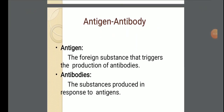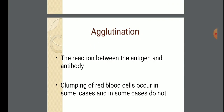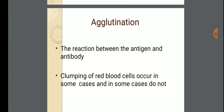This is antigen versus antibody. Antigens are molecules capable of stimulating an immune response — that is, the foreign substance that triggers the production of antibodies. Antibodies, that is immunoglobulins, are Y-shaped proteins produced by B cells of the immune system in response to exposure to antigens. Agglutination is the reaction between the antigen and antibody. Clumping of red blood cells occurs in some cases and in some cases does not.